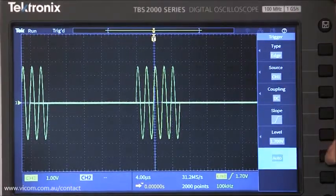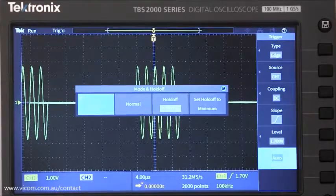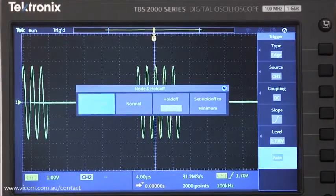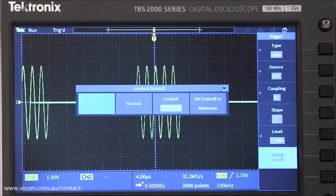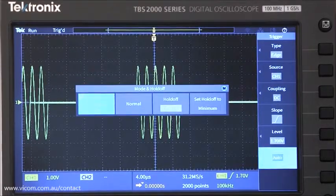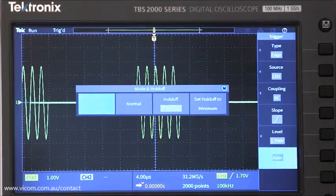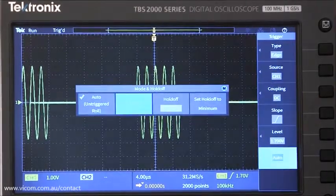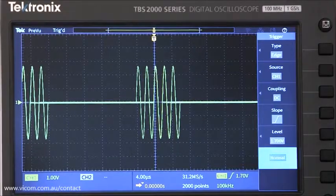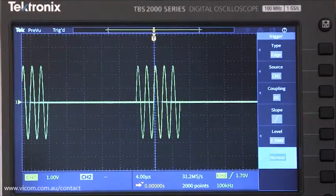The other trigger mode is normal mode. It's a little counterintuitive, but normal mode is not the default setting. When the trigger system is in normal mode, the scope acquires a waveform only when the trigger condition is met.